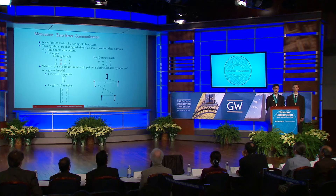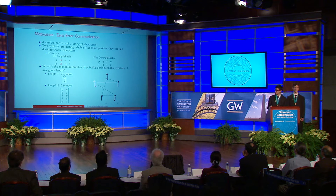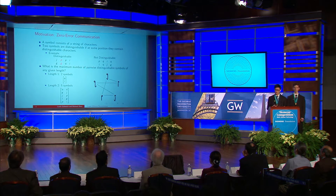A central question in information theory regarding this situation is, loosely speaking, to ask: what is the maximum rate at which information can be transmitted using this handwriting system, such that no errors occur? In order to provide a more precise formulation, we first define a symbol to be an arbitrary string of characters. We then say that two symbols are distinguishable if at some position they contain distinguishable characters. For instance, the two symbols JPPI and GGQI are distinguishable, because the second letter of the first symbol, P, and the second letter of the second symbol, G, are distinguishable — that is, they're connected in the distinguishability graph.